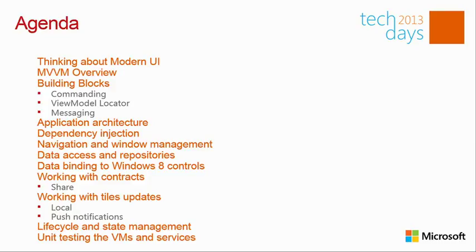After the overview, we'll dive deep into my sample application. I'll cover application architecture, dependency injection, navigation, managing windows in Windows 8, data access and the repository pattern, using Windows 8 controls like the GridView and Semantic Zoom with MVVM, contracts, tiles, lifecycle management, and finally testing the entire architecture. It's quite a lot — we might have to skip one or two things depending on how much I elaborate.